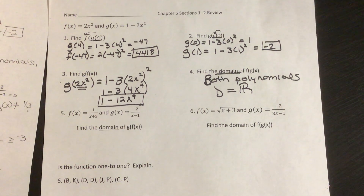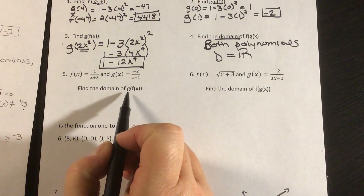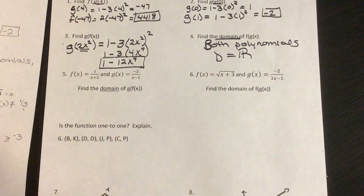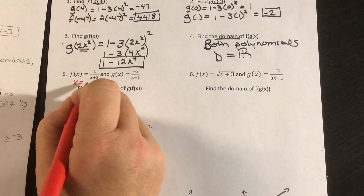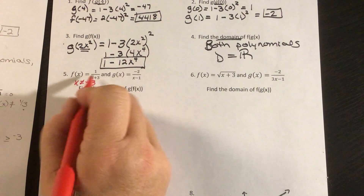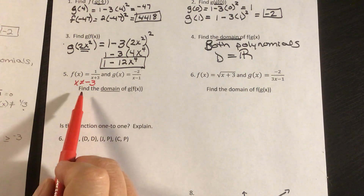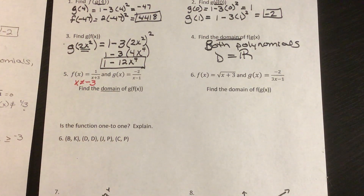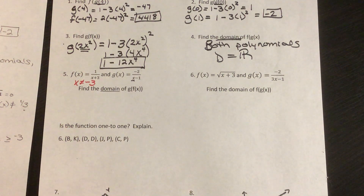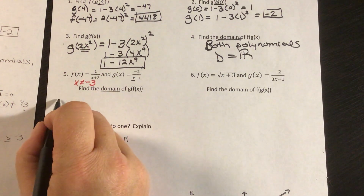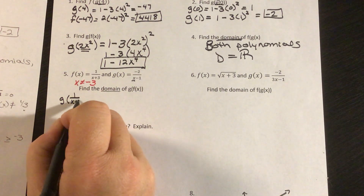In number 5, we have to find the domain of g of f of x. If I look at f of x, I know that x cannot equal negative 3 — that would give me a denominator of 0. So that is one restriction on our domain. Now if I put f of x into the g function where I see an x, I'm going to have g of 1 over x plus 3.